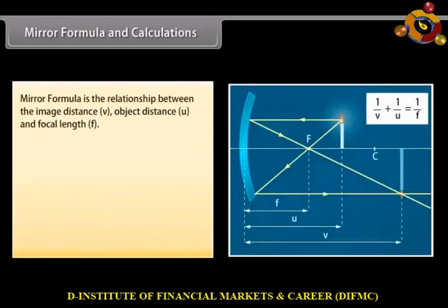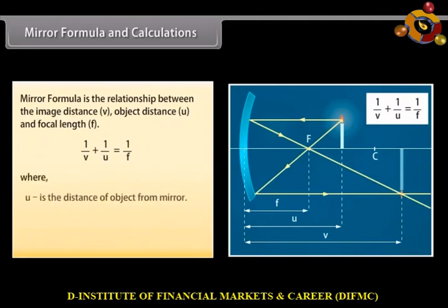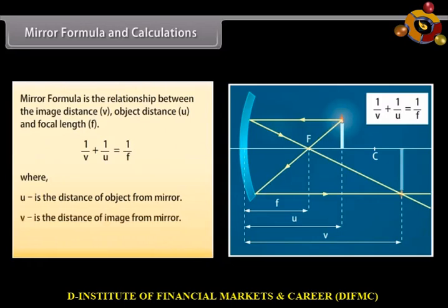Mirror formula and calculations: the mirror formula is the relationship between the image distance v, object distance u, and focal length f. The formula is: 1/v + 1/u = 1/f, where u is the distance of the object from the mirror, v is the distance of the image from the mirror, and f is the focal length of the mirror.